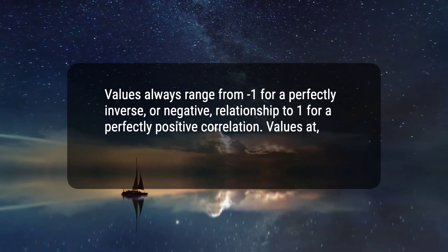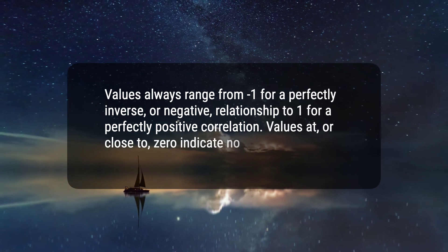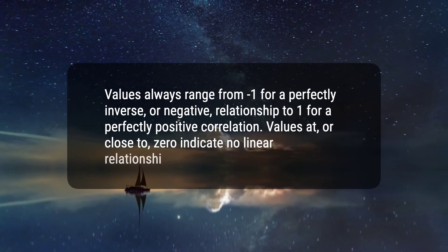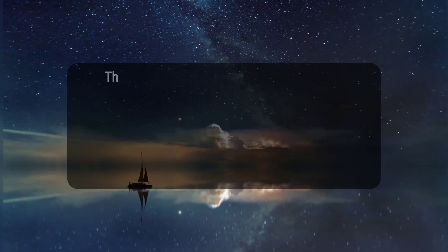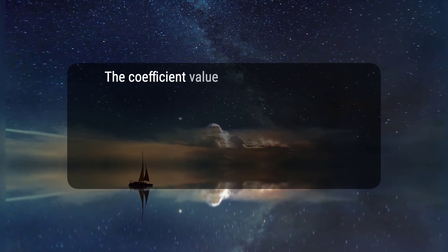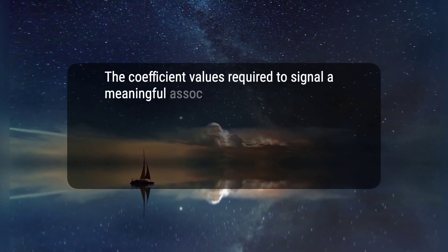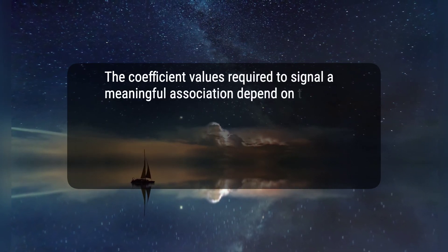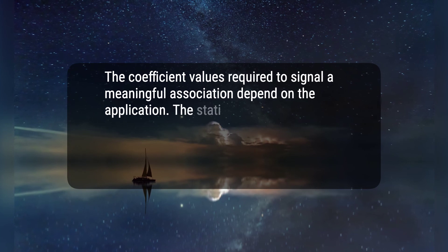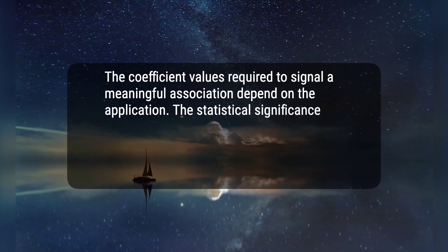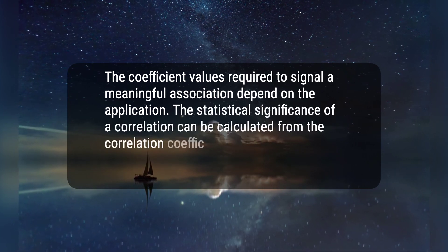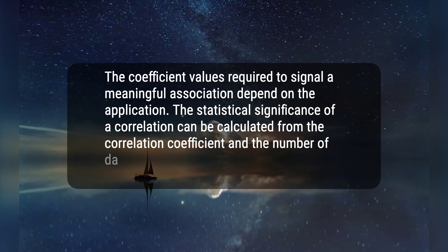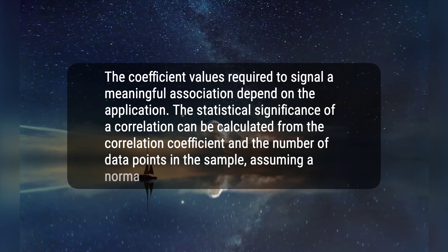4. Values at, or close to, 0 indicate no linear relationship or a very weak correlation. 5. The coefficient values required to signal a meaningful association depend on the application. The statistical significance of a correlation can be calculated from the correlation coefficient and the number of data points in the sample, assuming a normal population distribution.